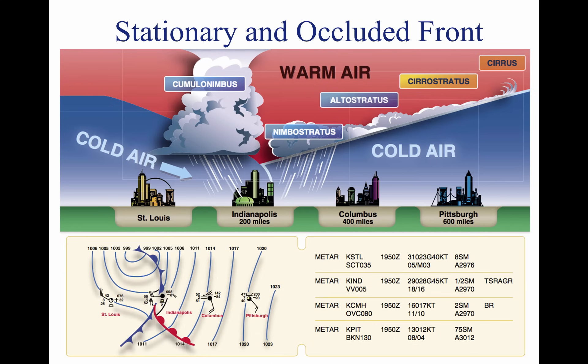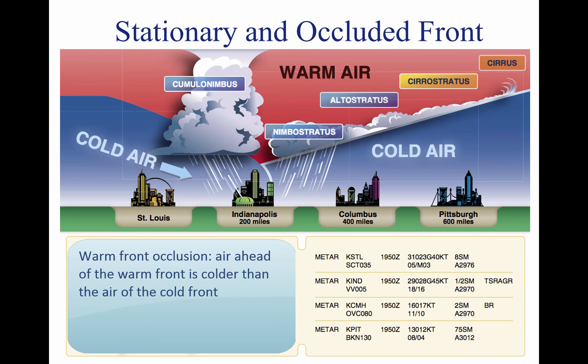Typically, the cold front occlusion creates a mixture of weather found in both warm and cold fronts, providing the air is relatively stable. A warm front occlusion occurs when the air ahead of the warm front is colder than the air of the cold front. When this is the case, the cold front rides up and over the warm front. If the air forced aloft by the warm front occlusion is unstable, the weather is more severe than in a cold front occlusion. Embedded thunderstorms, rain, and fog are likely to occur.